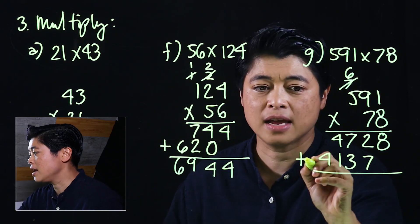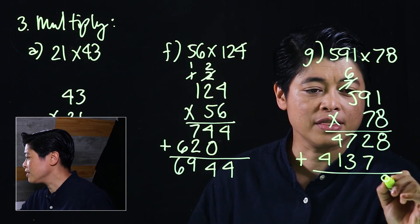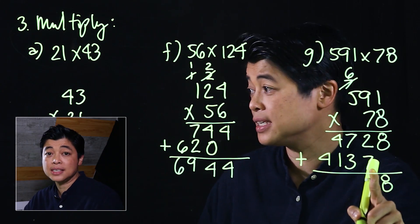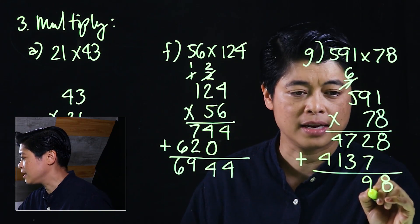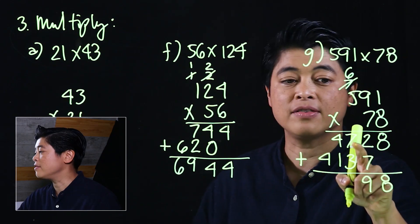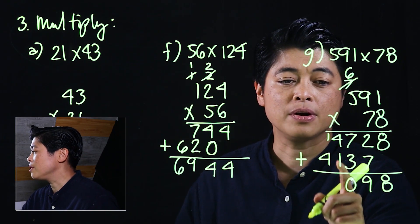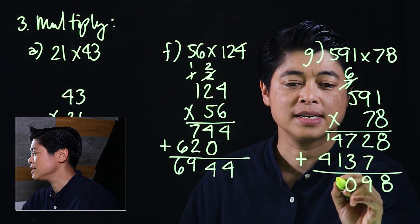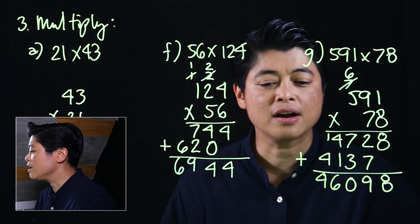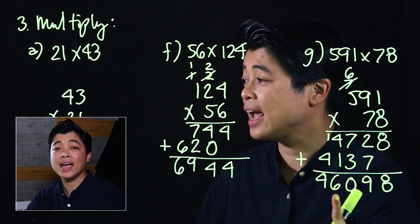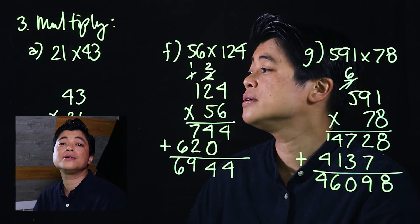35 plus six: I need five more to get to 40 and an extra one, making it 41. Now we add: eight and nothing is eight; seven plus two is nine; seven plus three is ten — carry or regroup; four plus one plus one is six; and four — making our final answer 46,098. If we are consistent in the way we solve it, it shouldn't be very hard. That concludes Lesson 2 of Chapter 3.